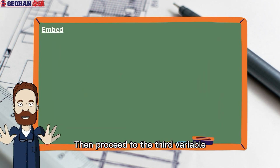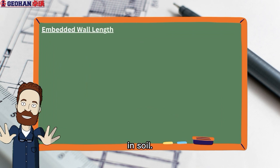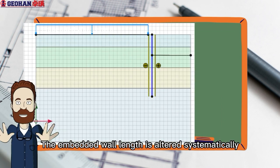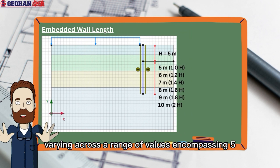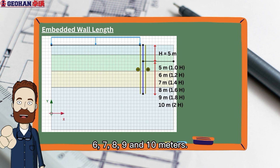Then, proceed to the third variable, the embedded wall length in soil. The embedded wall length is altered systematically varying across a range of values encompassing 5, 6, 7, 8, 9, and 10 meters.